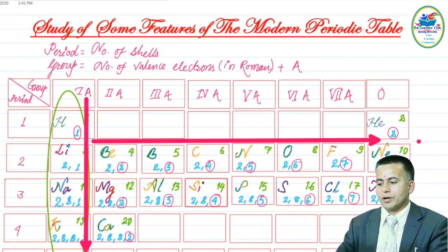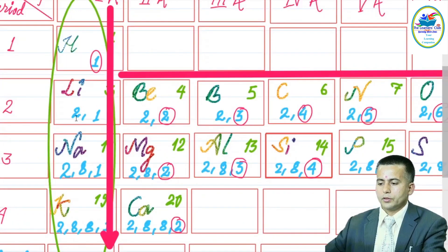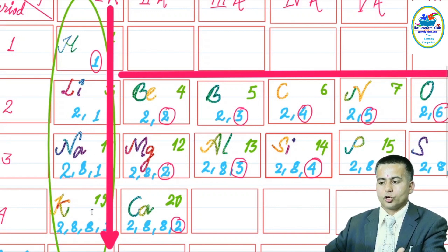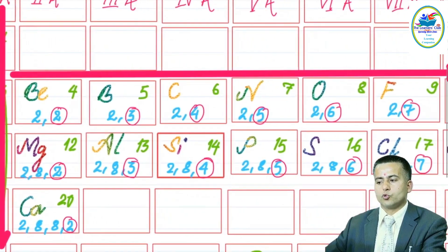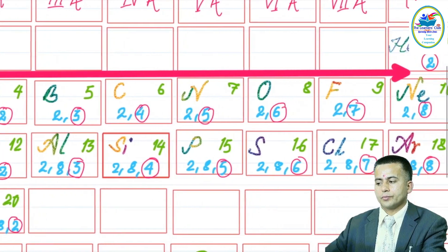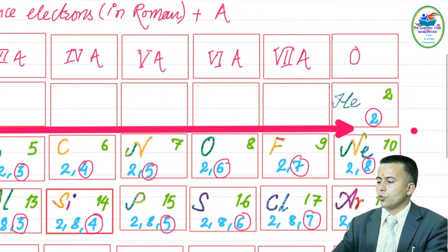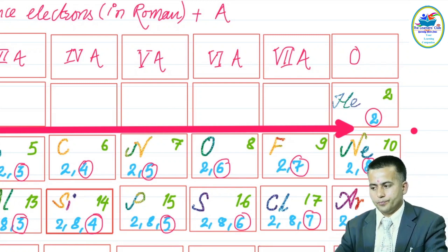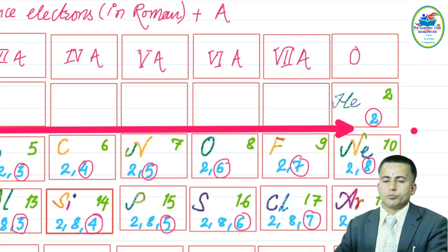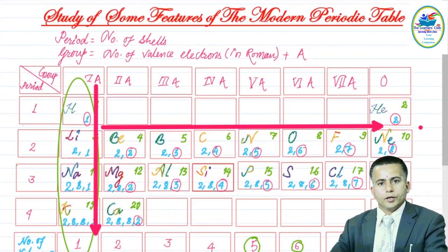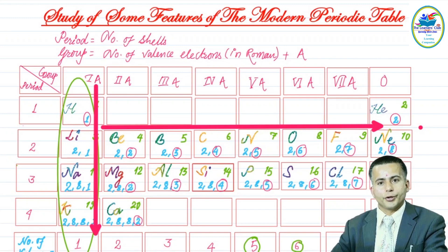On the left part of the periodic table, excluding hydrogen, we find very reactive metals: lithium, sodium, potassium, beryllium, magnesium, and calcium. As you move rightward, metallic property gradually decreases, and on the right side of the periodic table you find only non-metals. This is how metallic and non-metallic properties change across the periodic table — features of the modern periodic table for the first 20 elements.